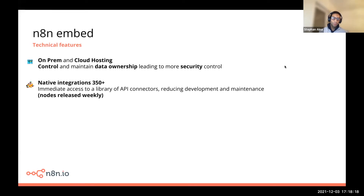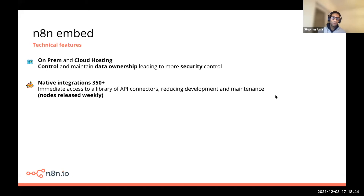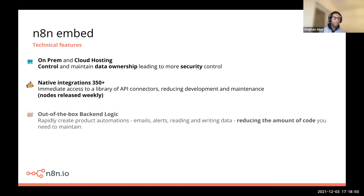As many of you know, we've been working very hard on our native integrations — we call them nodes. We have weekly releases and we're well over 350 nodes at the moment. This gives embed customers immediate access to a library of API connectors that we've built and maintain, reducing development effort. We also have a large partner base that can create nodes specific to our customers' businesses, and we provide out-of-the-box backend logic to rapidly create automations such as email alerts, sending data, and writing data — reducing the amount of code they need to maintain.